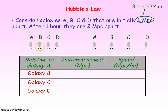Galaxy B, relative to galaxy A, was initially one megaparsec away but is now, an hour later, two megaparsecs away. So it's moved a distance of one megaparsec in that hour, giving it a speed of one megaparsec per hour.